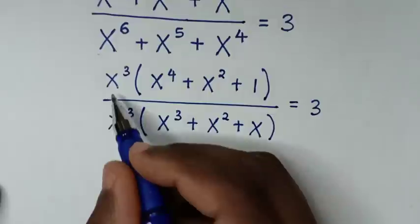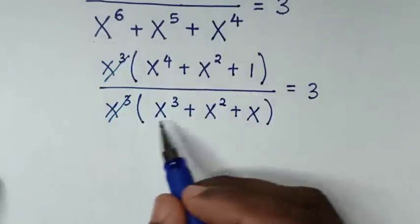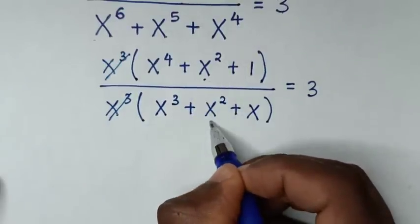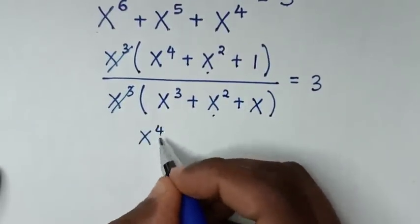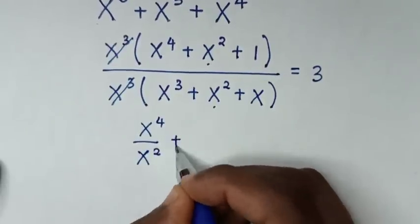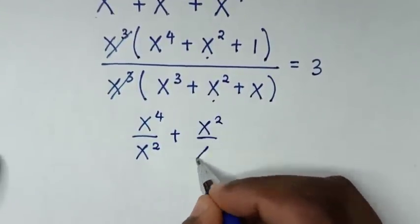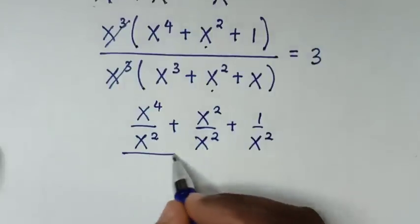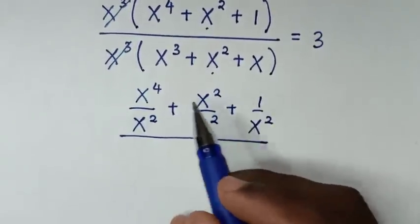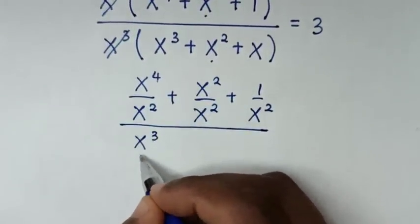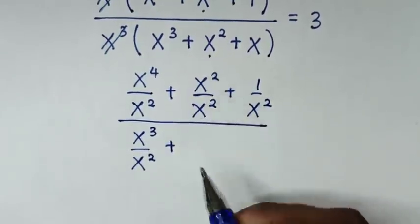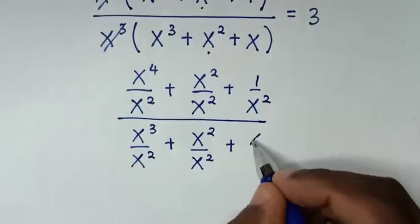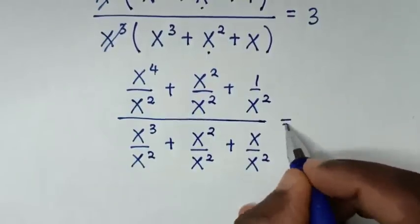In the next step we will simplify. x³ in the numerator will cancel x³ in the denominator. Then we divide by x² in both the numerator and the denominator. So it will be x⁴/x² plus x²/x² plus 1/x², over x³/x² plus x²/x² plus x/x², equal to 3.